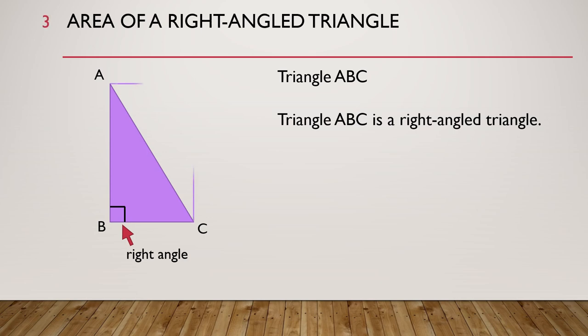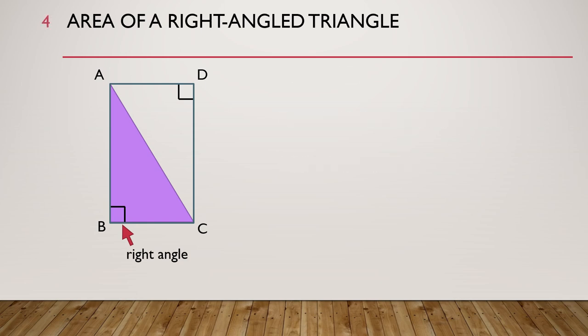I can draw two lines out from the triangle like this, and I get a rectangle. ABCD is a rectangle. Recall that the area of a figure is the amount of space taken up by the figure.